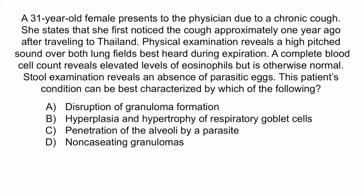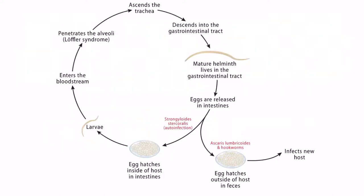Hopefully from the question stem you noticed that this patient developed a cough one year ago after traveling to Thailand. The physical exam description of high-pitched sounds is describing wheezing. The CBC with elevated levels of eosinophils is suggestive of a parasite infection. However, the stool examination didn't reveal any parasitic eggs, which may have thrown you off. We'll talk about this in a second, but this does not rule out a parasite infection. So this patient has Loeffler syndrome, and the correct answer is C — penetration of the alveoli by a parasite. Recall that Strongyloides penetrates the skin, which likely happened while this patient was visiting Thailand. From here, the larva entered the bloodstream and then penetrated the alveoli, causing pulmonary symptoms.